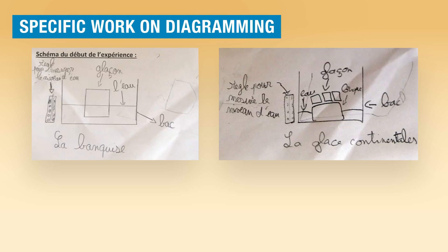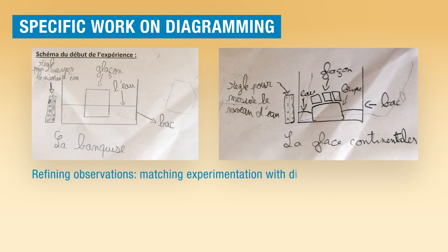For this last criterion, the question could be asked as to how to avoid time-consuming representations — for example, by directly marking the level. This work of analyzing the diagrams is also an opportunity to refine the observations to obtain a good match between the representations and the experiments. For example, the students' attention could be drawn to drawings of levitating continental ice tubes.